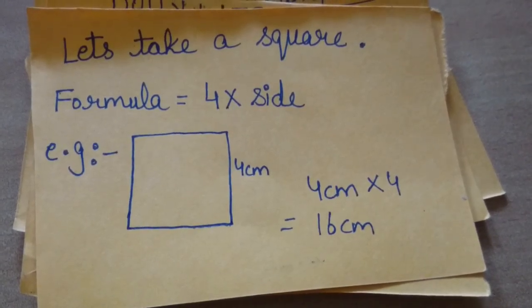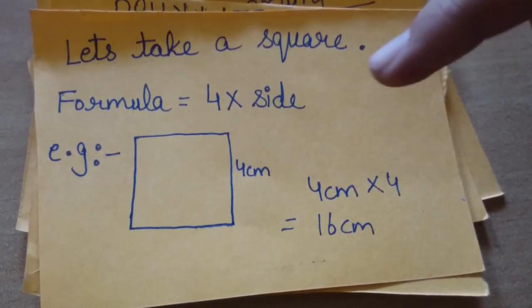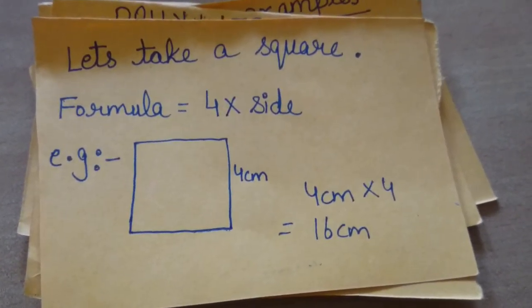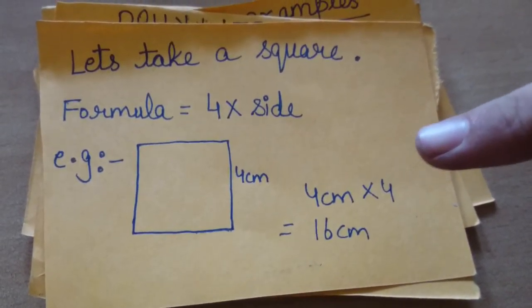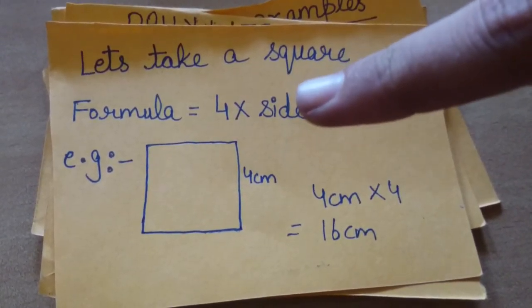Its formula is 4 times side. Let's take an example. Suppose we have a square whose sides are 4 cm in length. We will multiply 4 cm times 4. That is 16 cm, and 16 cm is the perimeter of the square.